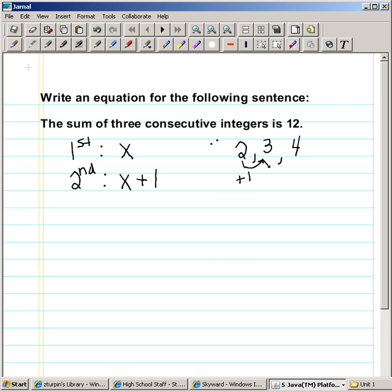To go from 3 to 4, I add another 1. So I know the third consecutive integer could be represented by x plus 1, the second integer, plus another one. Or, by simplifying that, it's really just the first integer, x plus 2.